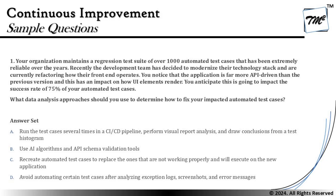Option A says: run the test cases several times in a CI/CD pipeline, perform visual report analysis, and draw conclusions from a test histogram. That looks very attractive because the journey starts with running the test cases, then performing visual report analysis, and then drawing conclusions. But when we talk about analyzing the test histogram for 1,000 test cases, it will be very time-consuming. We can already anticipate the impact of test cases without generating the histogram data. The scenario is clearly saying you anticipate a 75% impact, so doing duplicate work may not be recommended at this point because your scenario is already clarifying that you will have a larger impact.